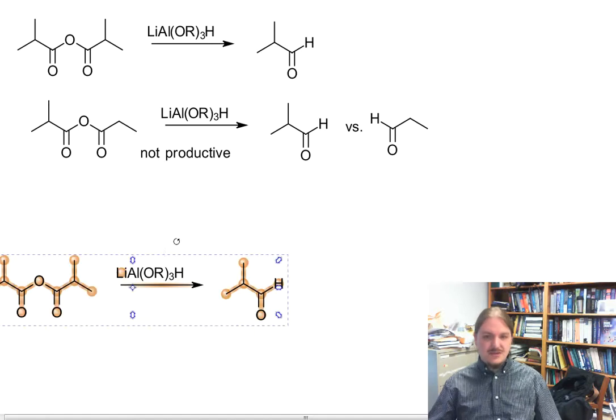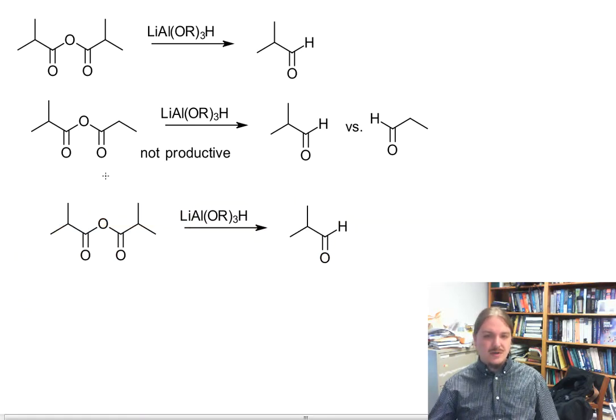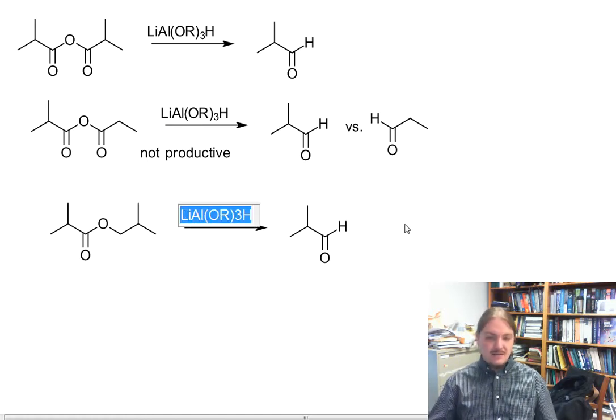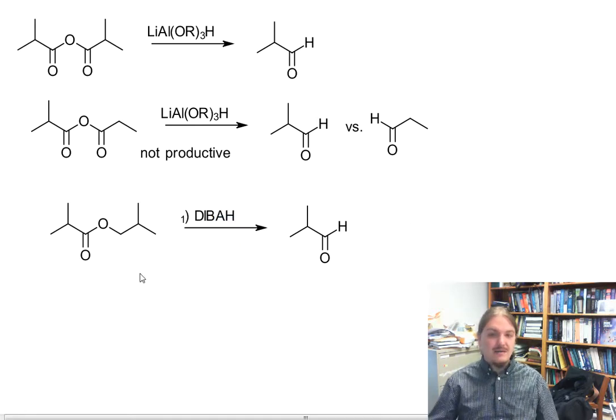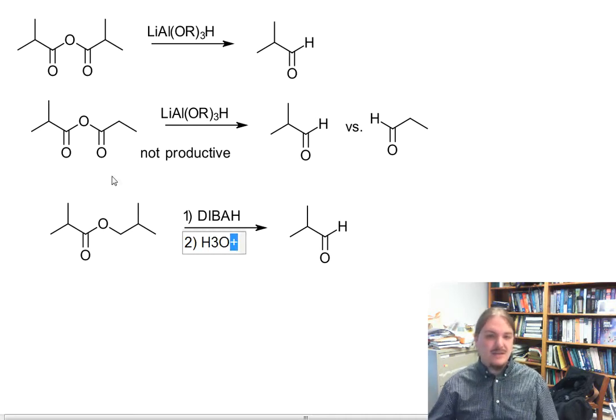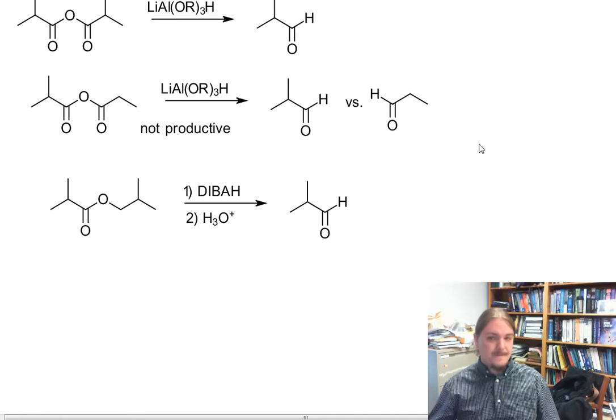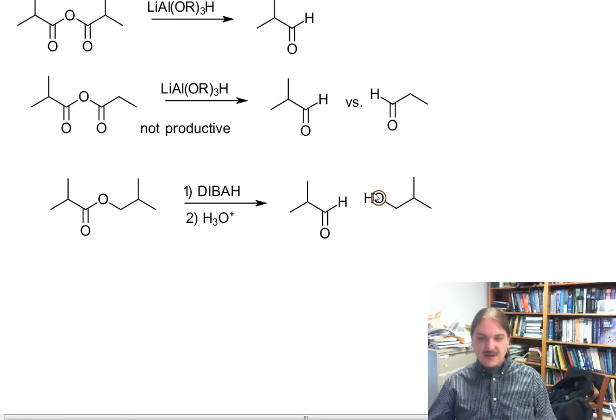Carboxylic acids are challenging to reduce to the corresponding aldehyde, but esters can be through the use of diisobutylaluminum hydride (DIBAH), followed by acidic aqueous hydrolysis of the acetal-like intermediate. Just like all other reactions of esters, this alcohol comes off as a leaving group.